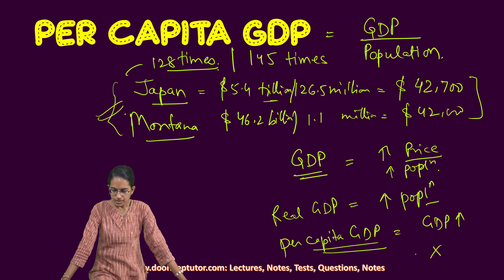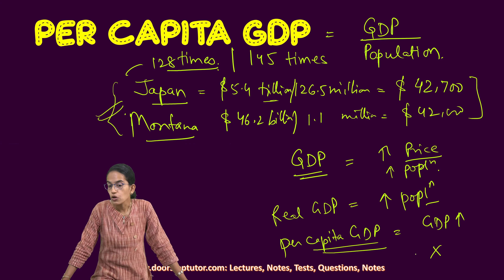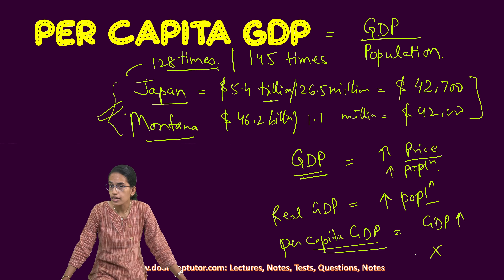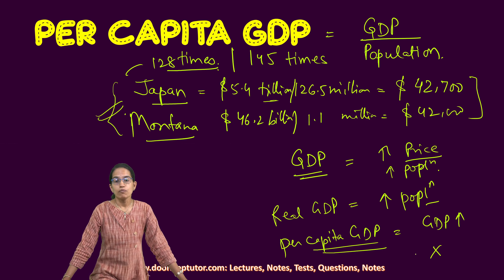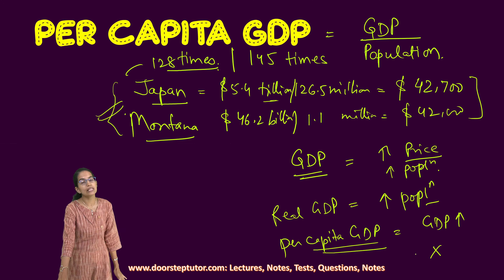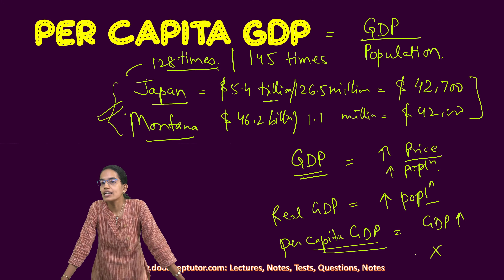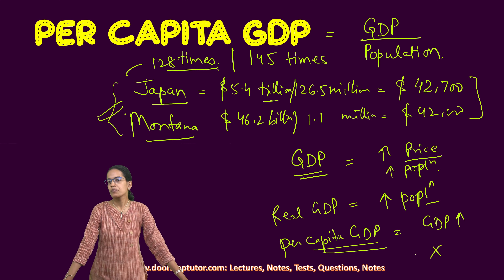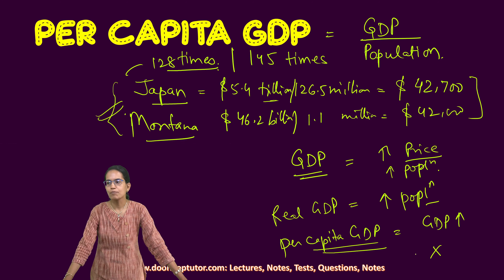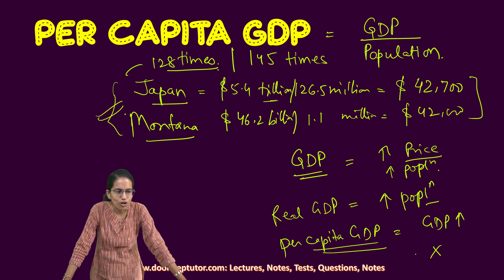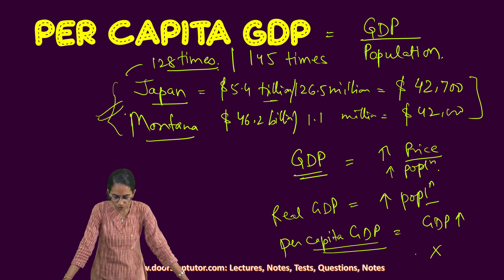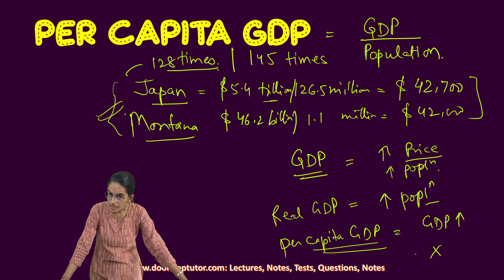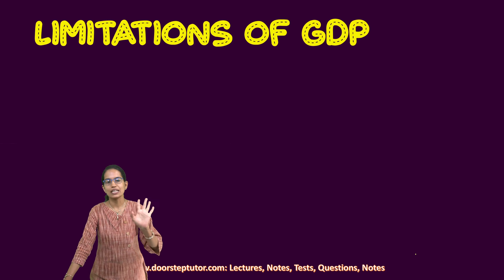GDP is an estimate, and it is very important to understand that when we talk about GDP, we are actually ignoring or underestimating numerous factors which happen in the economy. What are those factors? The underground economy — this includes any kind of illegal activities, cash payments, household vegetable garden production, household car repairs. All those would not be counted in the GDP of the nation, and that's one of the major limitations of GDP.